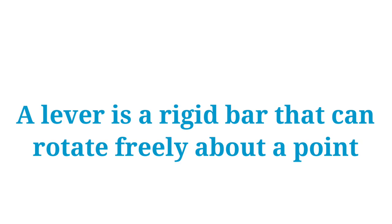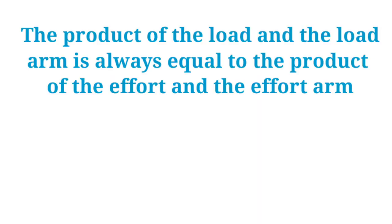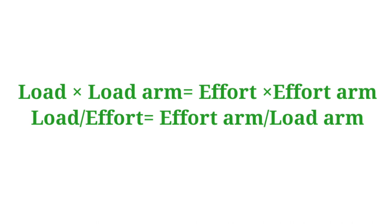Number one: lever. A lever is the simplest of all types of machines. A lever is a rigid bar that can rotate freely about a point. The fixed point about which the lever can rotate is called the fulcrum. The object to be lifted or moved is called the load, and the force applied on the lever is called the effort. The product of the load and the load arm is always equal to the product of the effort and the effort arm — this is the principle of the lever.